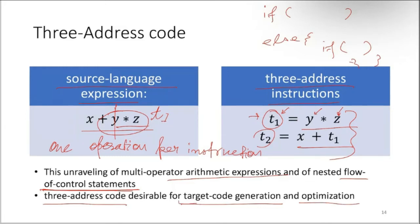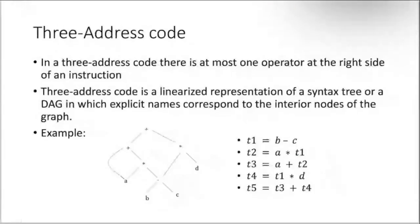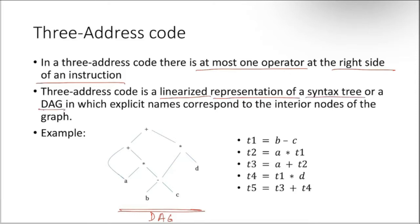If we look at the DAG we constructed previously, in three-address code there is at most one operator at the right side of the instruction. Three-address code is a linearized representation of a syntax tree or a DAG. If you have a DAG or syntax tree, you can convert it to three-address code.